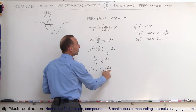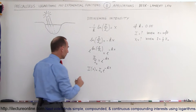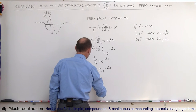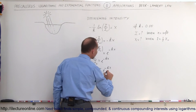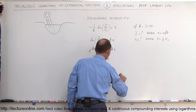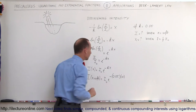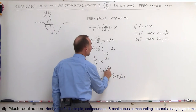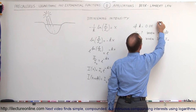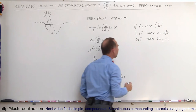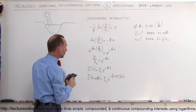Now we plug in the value for k and x to get the intensity at 10 feet. So I(10) = I₀ × e^(-0.05 × 10). Notice that since x is in feet, k must be in units of 1/feet in order to cancel the units.